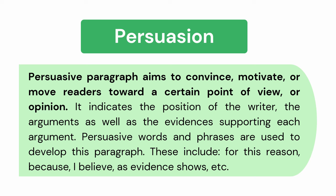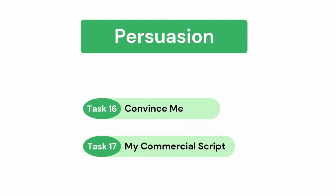A persuasive paragraph aims to convince, motivate, or move readers toward a certain point of view or opinion. It indicates the position of the writer, the argument, as well as the evidence supporting each argument. Persuasive words and phrases are used to develop this paragraph. These include: for this reason, because, I believe, as evidence shows, etc. You need to answer Task 16, Convince Me, and Task 17, My Commercial Script.